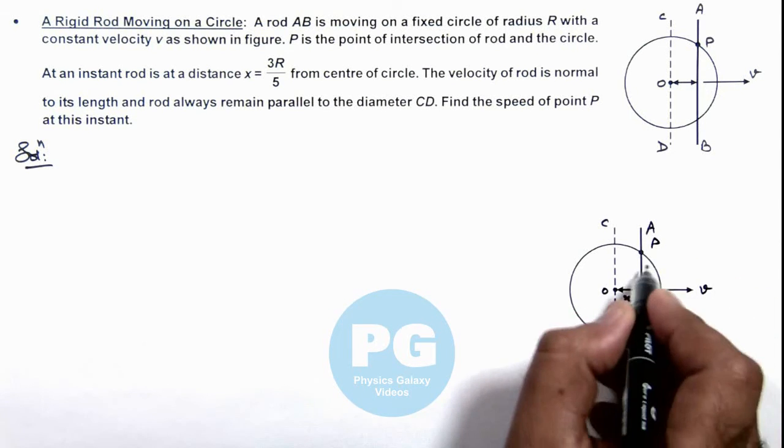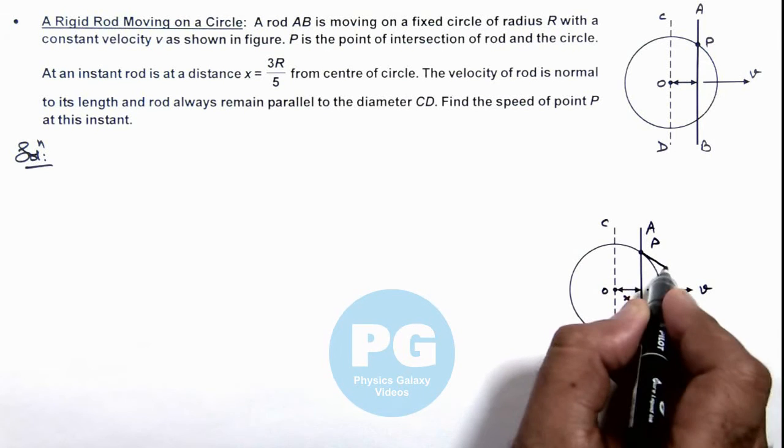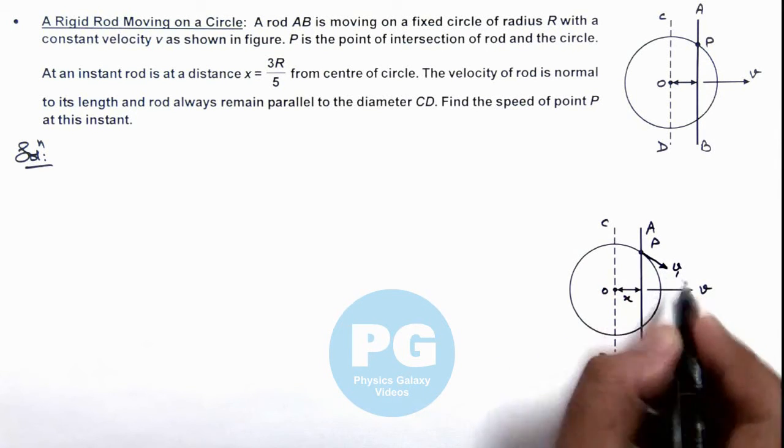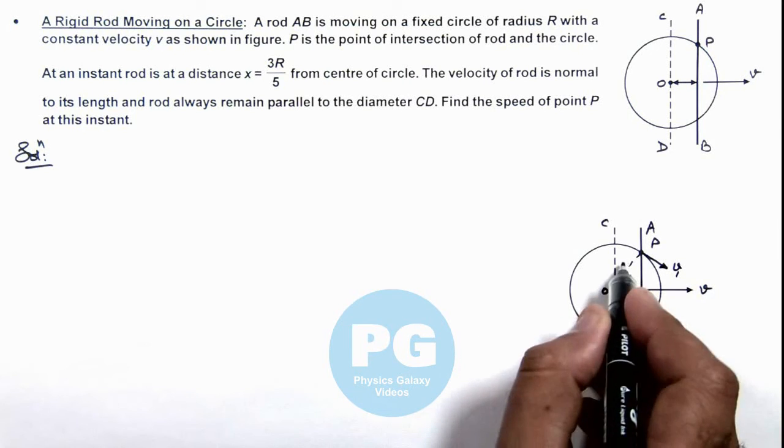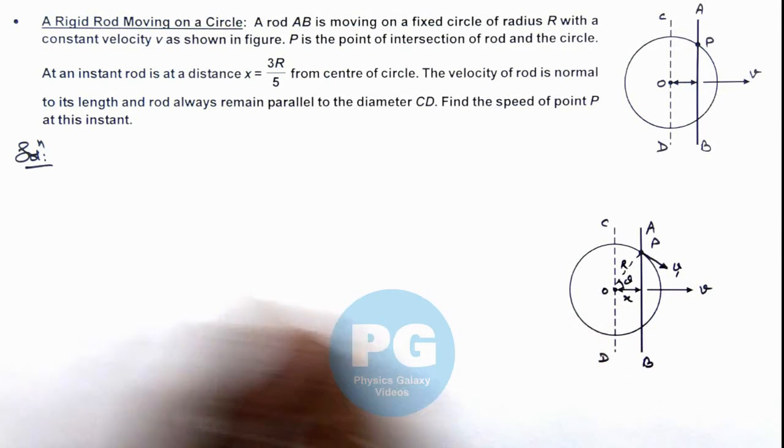Certainly in this situation point P would be moving tangentially with a speed v1. If this angle is theta and this is the radius R of circle, we can directly write.